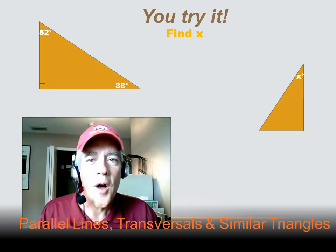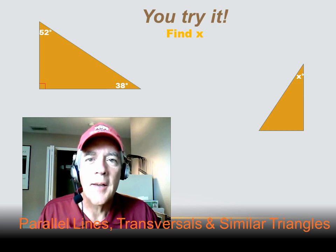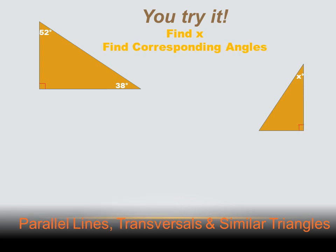Try this one — hit the pause button, do the problem, and then hit your forward key. This one is easy if we can identify which angles are corresponding. We know that one angle and its counterpart are both right angles. We can see that the longest side appears on both triangles. If we turn the smaller triangle so it lines up in the same orientation as the larger triangle, we can clearly see that the unknown angle is going to be 38 degrees, because the corresponding angle in the larger triangle is 38 degrees.